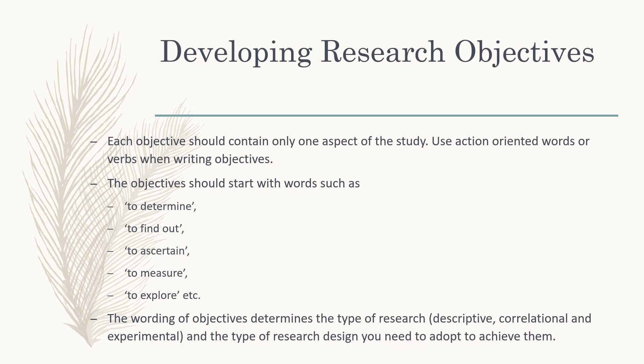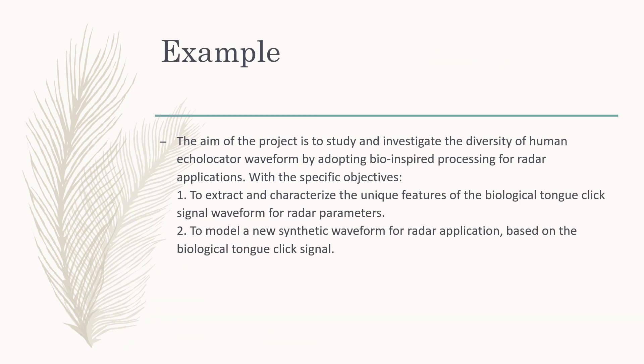The objective should contain only one aspect of study. Use action-oriented words or verbs when writing objectives, such as 'to determine,' 'to find out,' 'to ascertain,' 'to measure,' or 'to explore.' Remember that the words you choose should be measurable. Also, the wording of the objective determines the type of research — whether it is descriptive, correlational, or experimental — and the type of research design you need to adopt to achieve them.